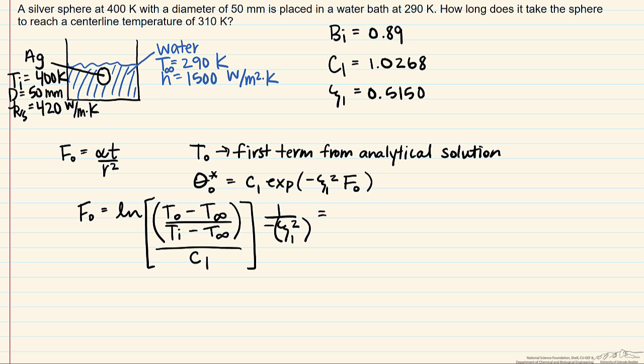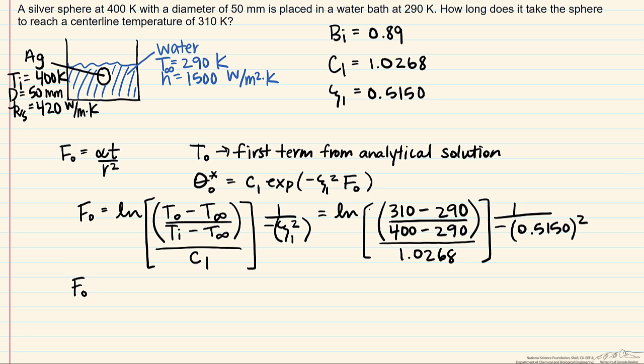So now we're going to solve for this. So if we solve for this Fourier number, we get 6.5, and now we're looking for the time, which is equal to the Fourier number times the radius squared divided by the thermal diffusivity.